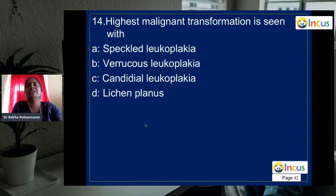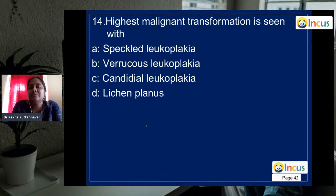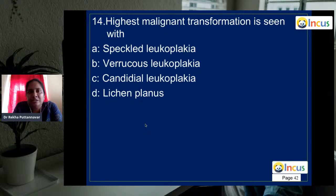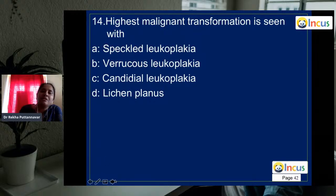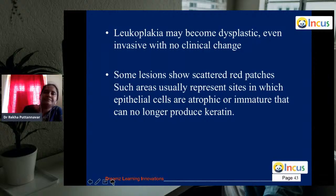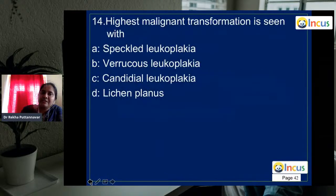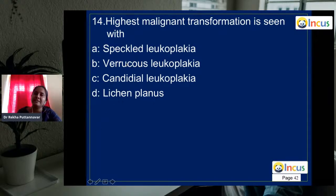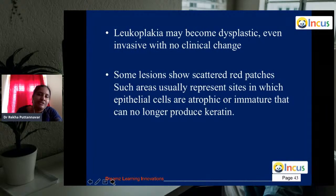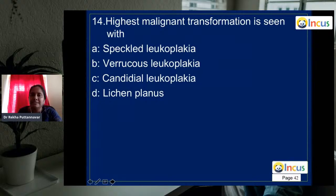Question 14: highest malignant transformation is seen in which type of leukoplakia? Speckled leukoplakia is a mixed red and white lesion — the red areas indicate atrophic dysplastic changes. Other types have keratinized parts, but speckled leukoplakia fails to keratinize properly, making it more prone to dysplastic changes and malignant transformation. The answer is A — speckled leukoplakia.